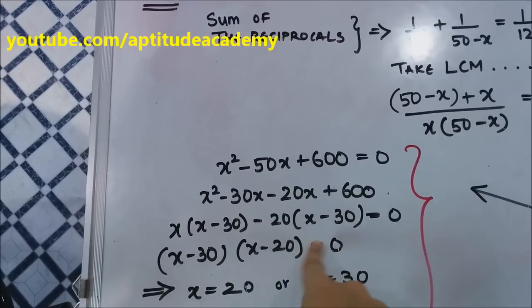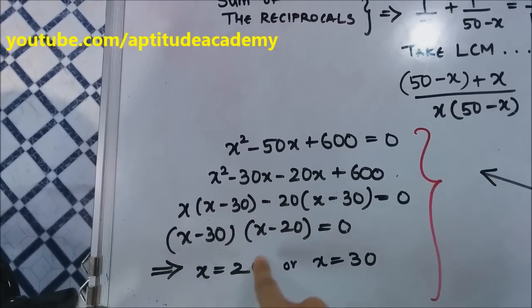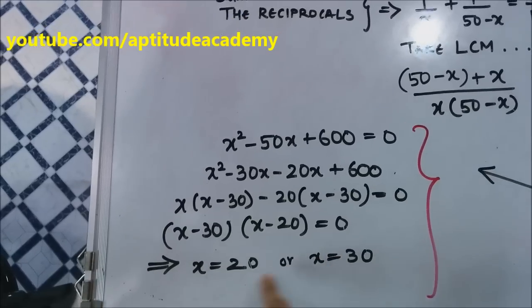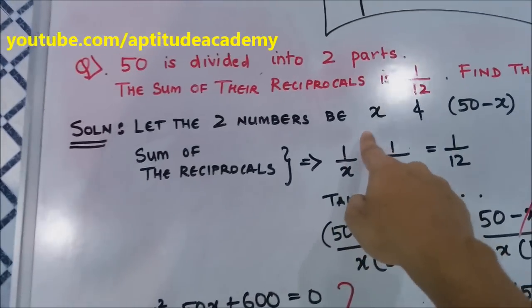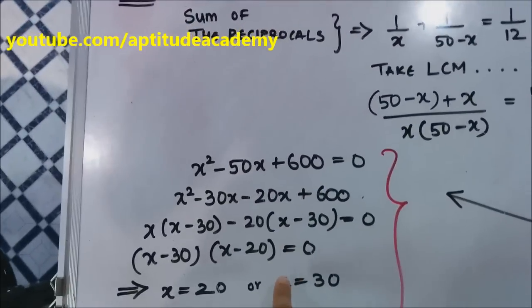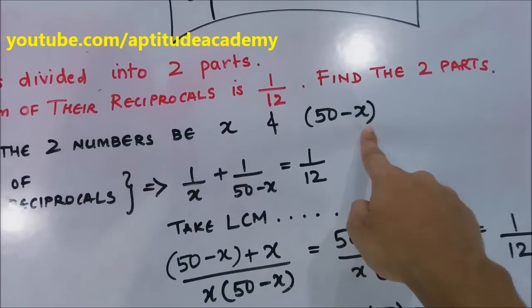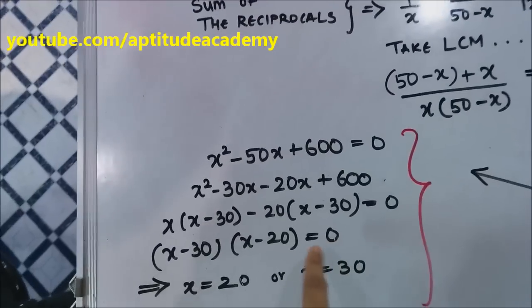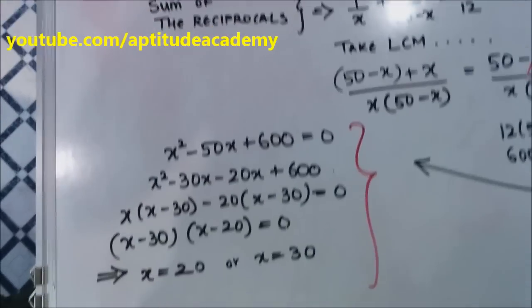If you equate both of them to 0, you will either get x = 20 or x = 30. If x = 20, then the second term will be 50 - 20, that will be 30. And if you take x = 30, then 50 - 30 will be 20. So your answer is 20 and 30. Thank you.